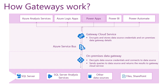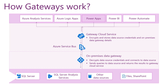The gateway cloud service encrypts and stores the data credentials and on-premises data gateway details, and it routes the queries and results between the cloud services and the on-premises data sources through the on-premises data gateway. This is how the gateway works in detail.